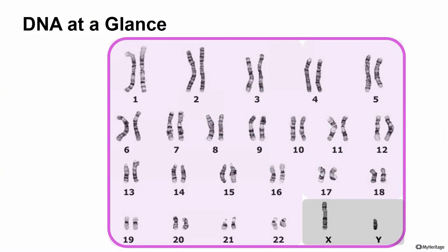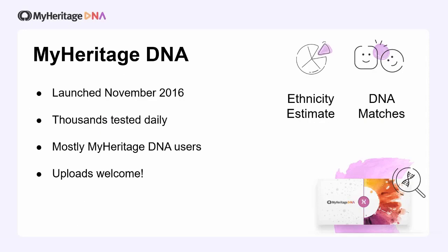From all those 23 pairs of chromosomes, MyHeritage looks into 22. That is very important to establish from the very beginning, because one pair is dedicated to gender — it's the one in charge of saying you are male or female, at least biologically speaking. So MyHeritage doesn't look into that pair; MyHeritage looks into the 22 other pairs of chromosomes, and also not necessarily all areas in the DNA.